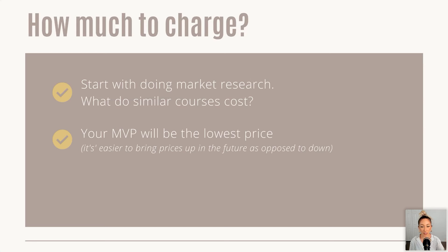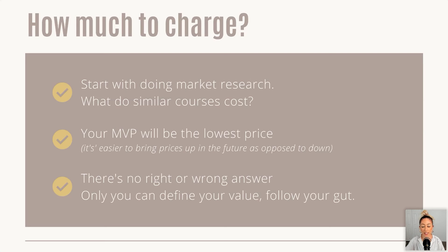Here's why starting lower is safer: if you launch your MVP at $500 and get only five sales when your goal was 50, and then reduce it to $297 for the next launch, the original five people will rightfully ask for a partial refund. So start lower, then as your course evolves, bring the price up until you're at a price you're solid with. There's no right or wrong answer — only you can truly define what your value is and the value your course offers. Listen to your gut and set that price.